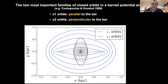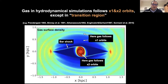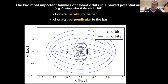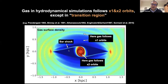In a bar potential, the two most important families of closed orbits are x1 orbits — elongated in the direction parallel to the bar — and x2 orbits — mildly elongated perpendicular to the bar. When you run a simulation of gas flow in that same bar potential, the gas follows x1 orbits in the outer region and x2 orbits in the inner region. In between, there is a transition region with no non-self-intersecting closed orbits available. In this transition region, the gas transits from one type of orbit to the other along large-scale bar shocks — the theoretical counterpart of bar dust lanes seen in external galaxies.